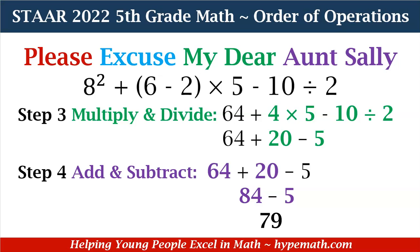Finally, we are going to add and subtract from left to right. Starting with 64 plus 20, that is 84. Then 84 minus 5 equals 79. And we conquered that expression.